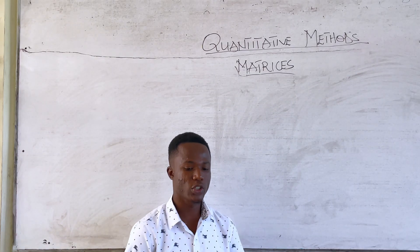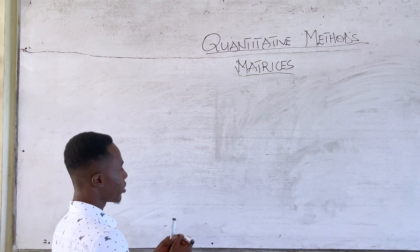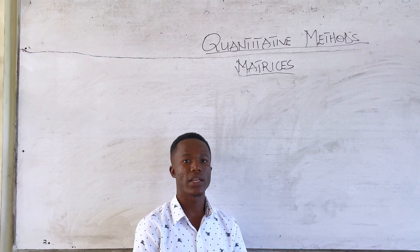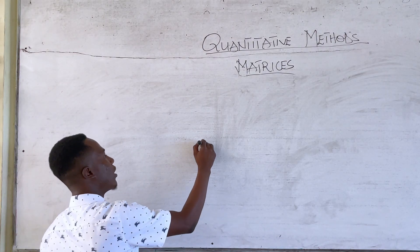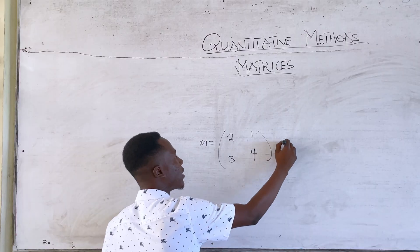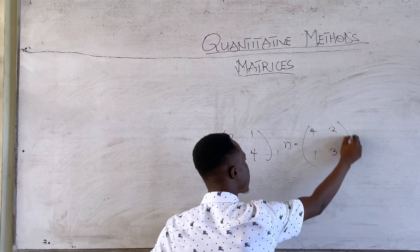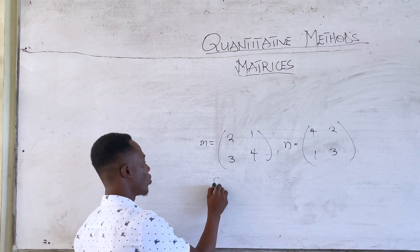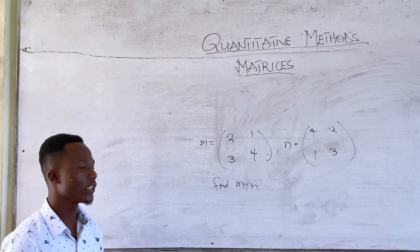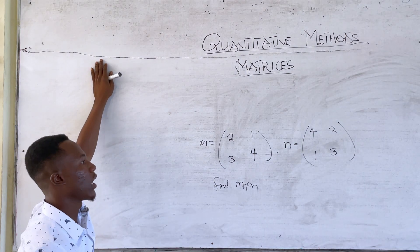Now let's look at multiplication of matrices. We should know that each and every time they are going to give us a matrix. So because it is multiplication, if our M is equal to [2, 1; 3, 4] and N is equal to [4, 2; 1, 3], something like this, and if they ask you to calculate M multiplying N, this is what we mean by multiplication of two matrices. So let's look at how to perform the multiplication.